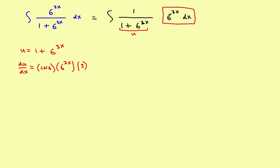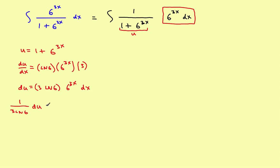We need a 6 to the 3x dx term. Rearranging, moving 3 and natural log of 6 to the other side gives us: 1 over (3 times the natural log of 6) du equals 6 to the 3x dx. This matches what we need to eliminate, so we isolate this as our u-substitution. Now rewriting: the integral becomes the integral of 1 over u, times 1 over (3 times the natural log of 6) du.